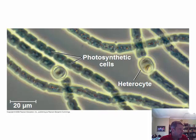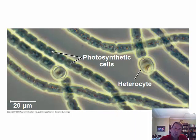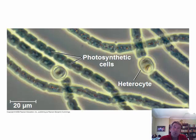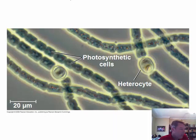Some types of cyanobacteria are nitrogen-fixing, meaning they can convert nitrogen into a usable form. These bacteria are very important for plants — they live on the roots of certain plants and convert a form of nitrogen the plants can't use into a form they can use. They only grow on certain plants, specifically legumes such as peas and beans, making them ecologically very important.